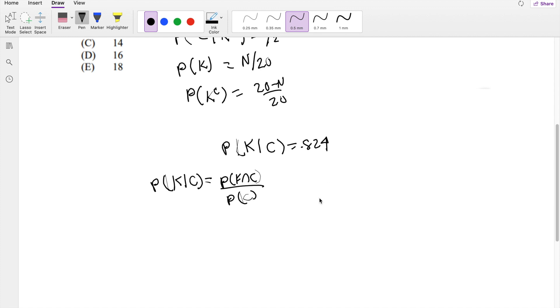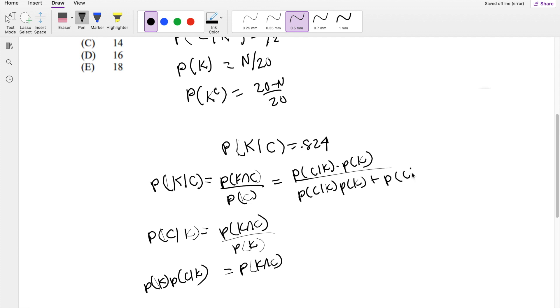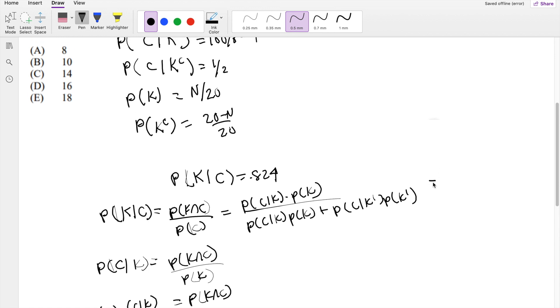Because we know that P(C|K) equals P(K and C) divided by P(K). We know the intersection, P(K and C), is just equal to P(K) times P(C|K). So plugging that in, you get P(C|K) times P(K). And by the law of total probability, we know that this could be broken down into P(C|K) times P(K) plus P(C|not K) times P(not K). So this is also equal to 0.824.